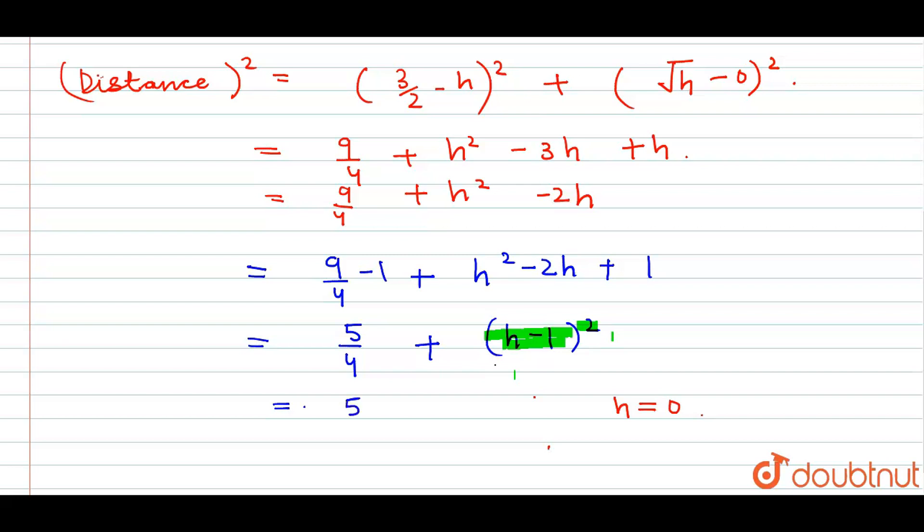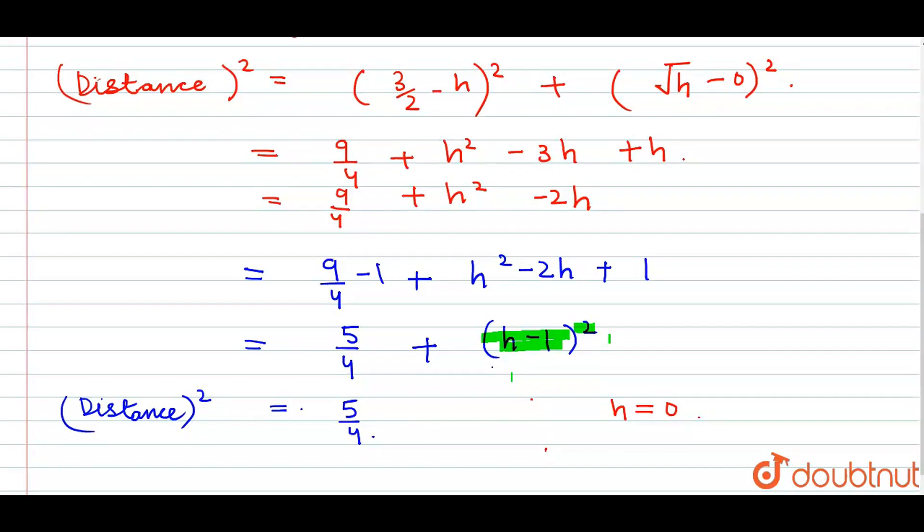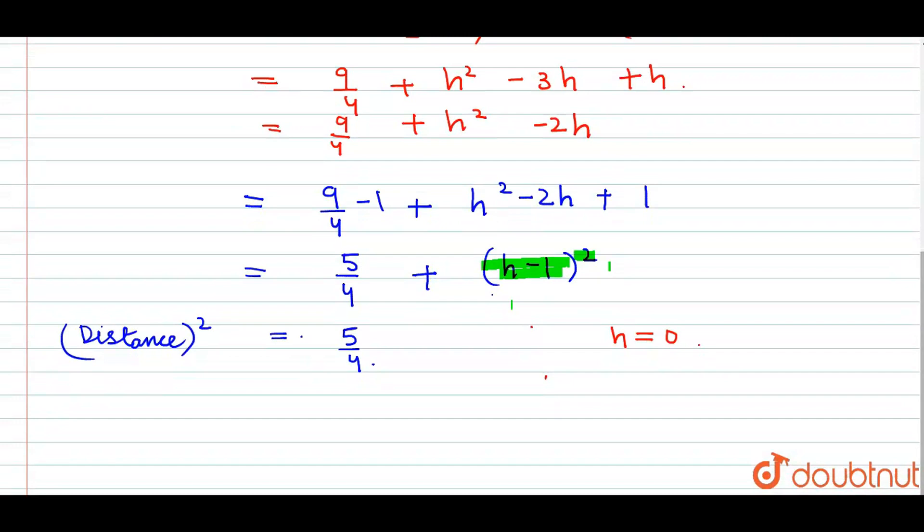Our minimum distance squared is equal to 5/4. So our minimum distance is √5/2. As we complete the perfect square, we get our minimum distance, and this is our answer. Thank you.